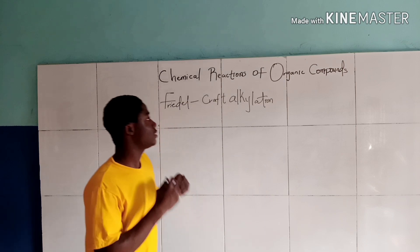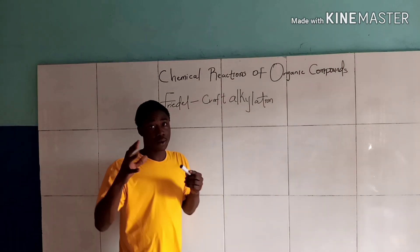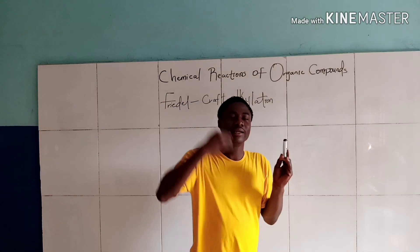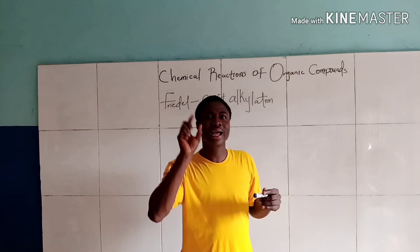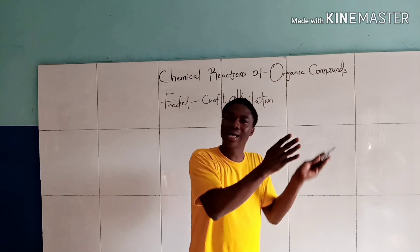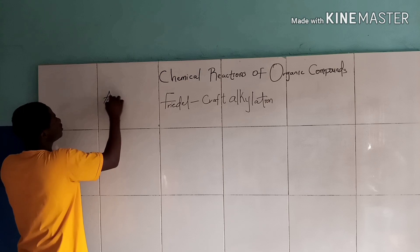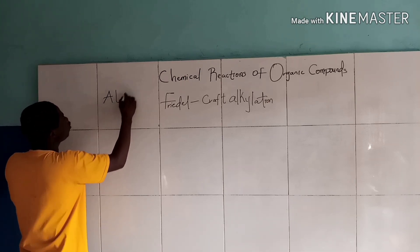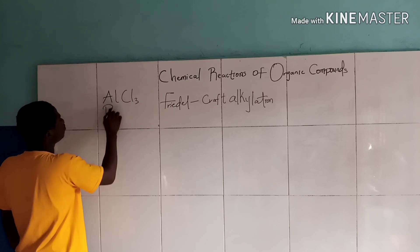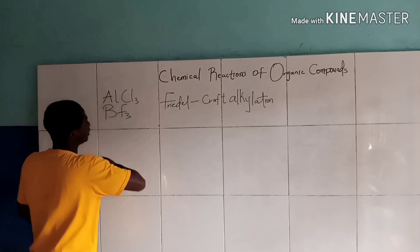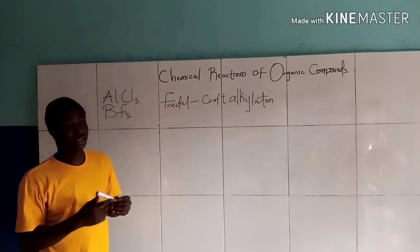Now this is the reaction mechanism. For Friedel-Crafts alkylation, benzene reacts with a haloalkane in the presence of a Lewis acid catalyst. Examples of Lewis acid catalysts include Aluminium Chloride (AlCl₃) and Boron Trifluoride (BF₃). All of these are examples of Lewis acid catalysts.